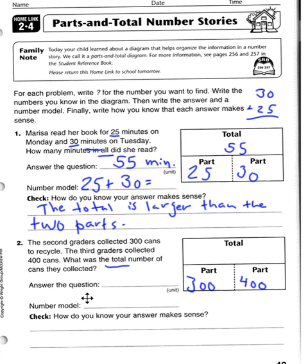Because we're looking for the total, we know we have to add. So 300 plus 400 equals...